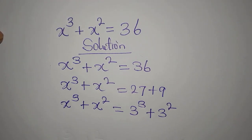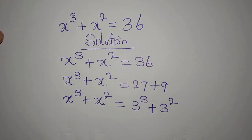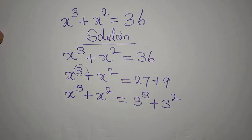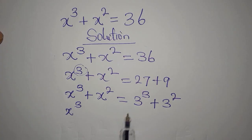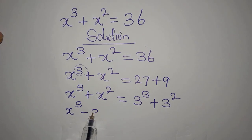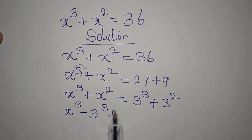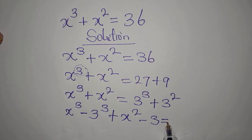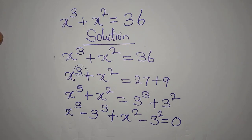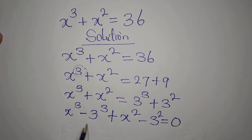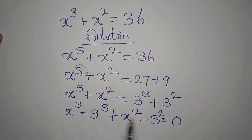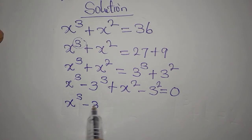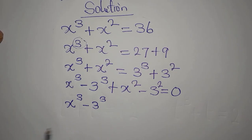But we need more solutions. We're supposed to have three solutions because of the highest power of 3. So we bring everything to the left: x³ minus 3³ plus x² minus 3² equals zero, because these two terms on the right hand side have been shifted to the left.